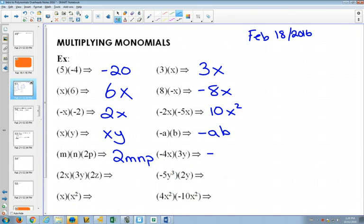And this one becomes negative 12xyz. 2 times 2x times 3y times 2z. What's the coefficient going to be when you multiply that all out? 12, because 2 times 3 is 6, times another 2 is 12. And then you just have xyz.